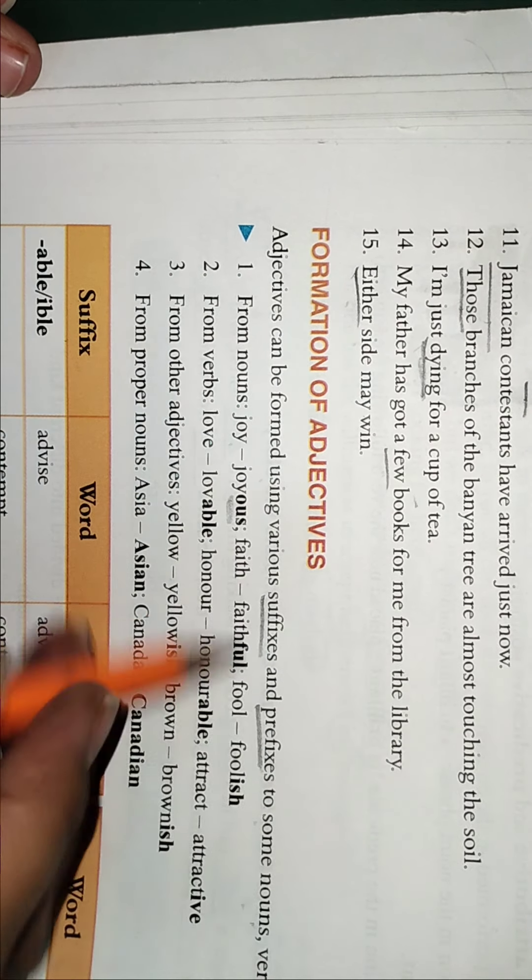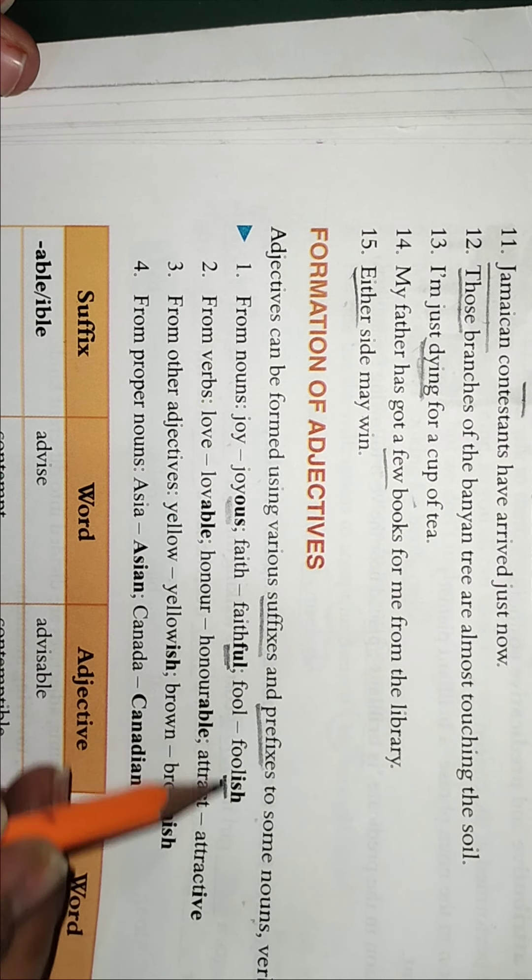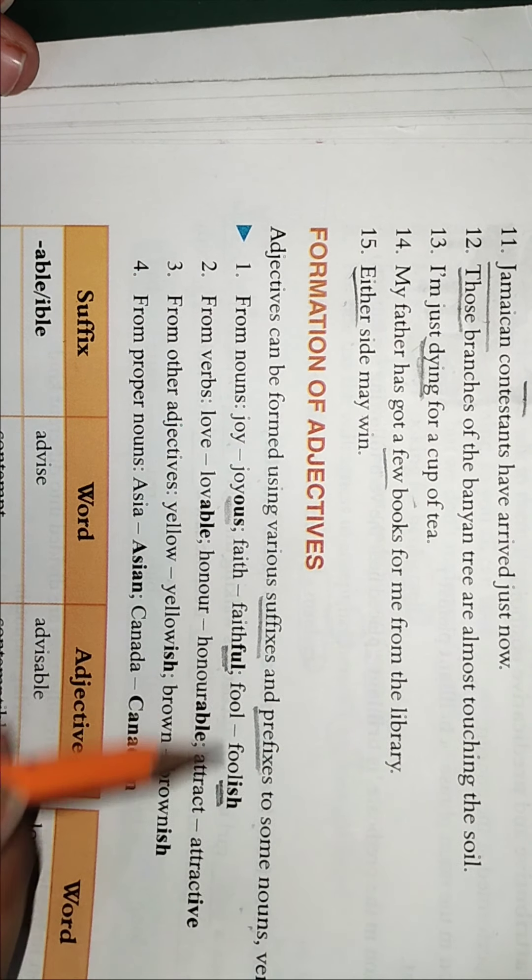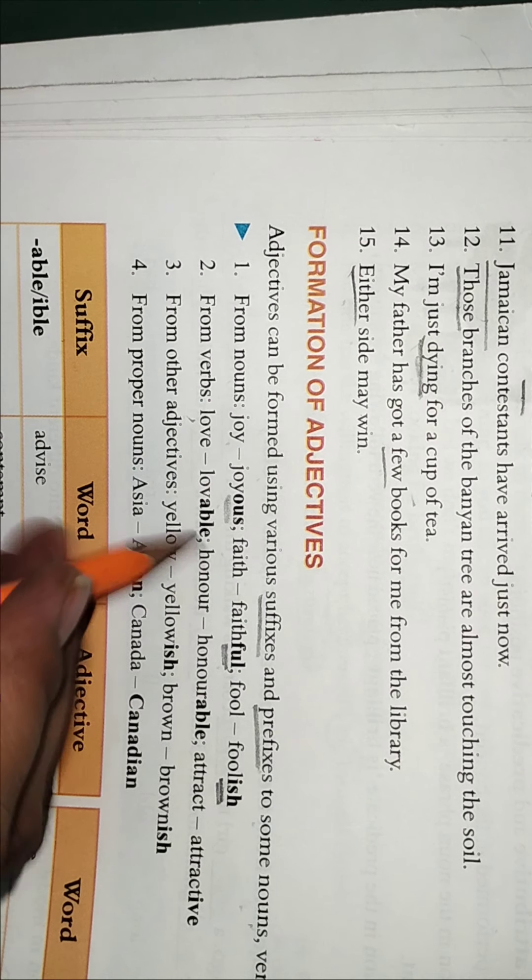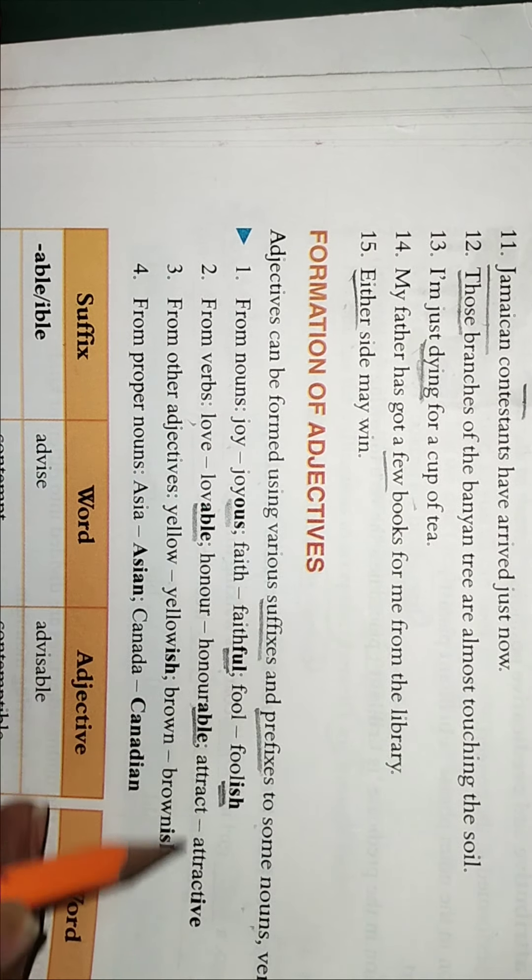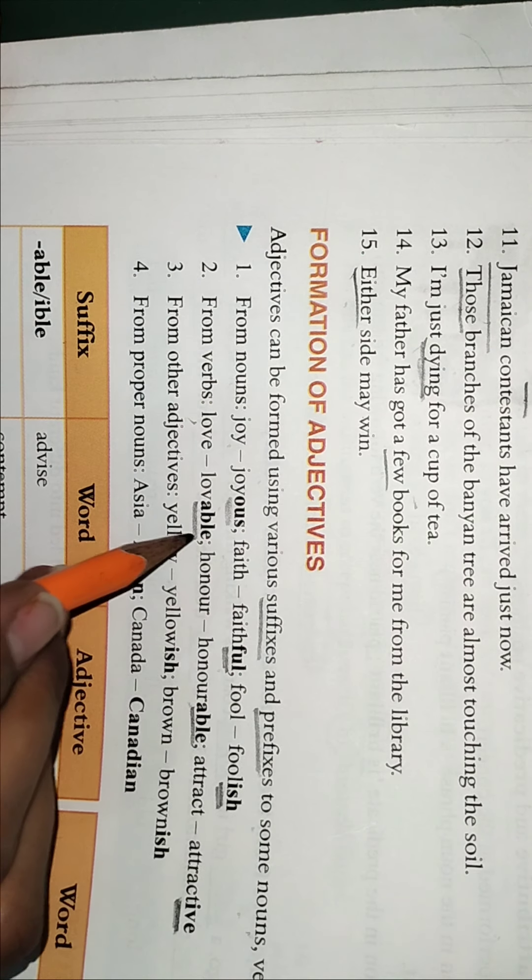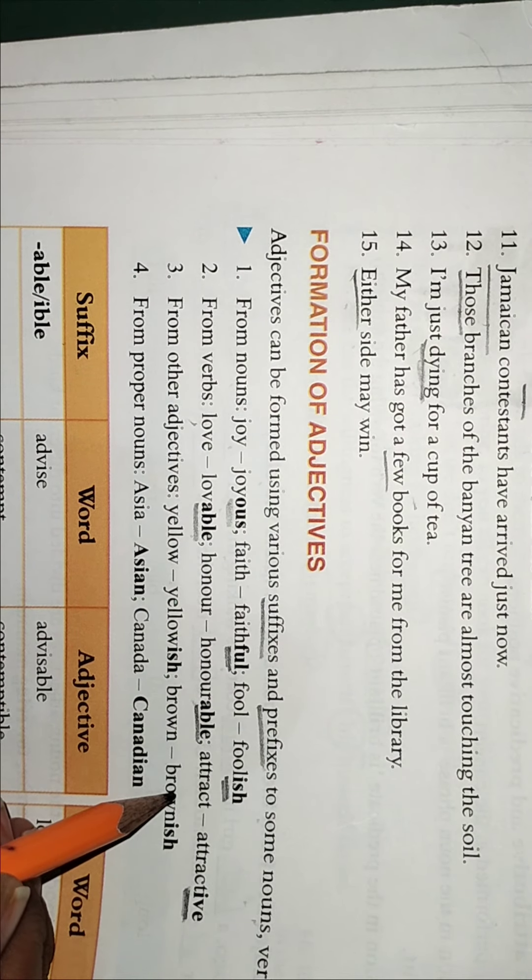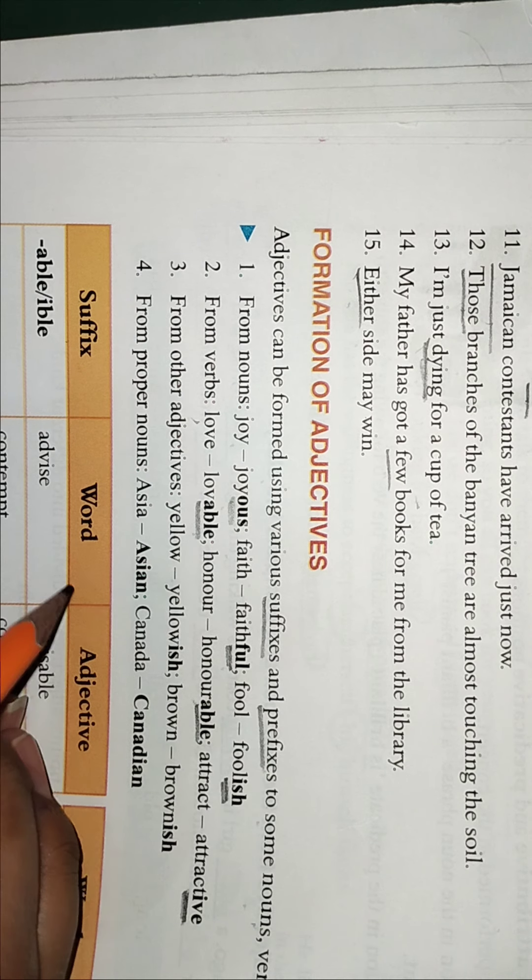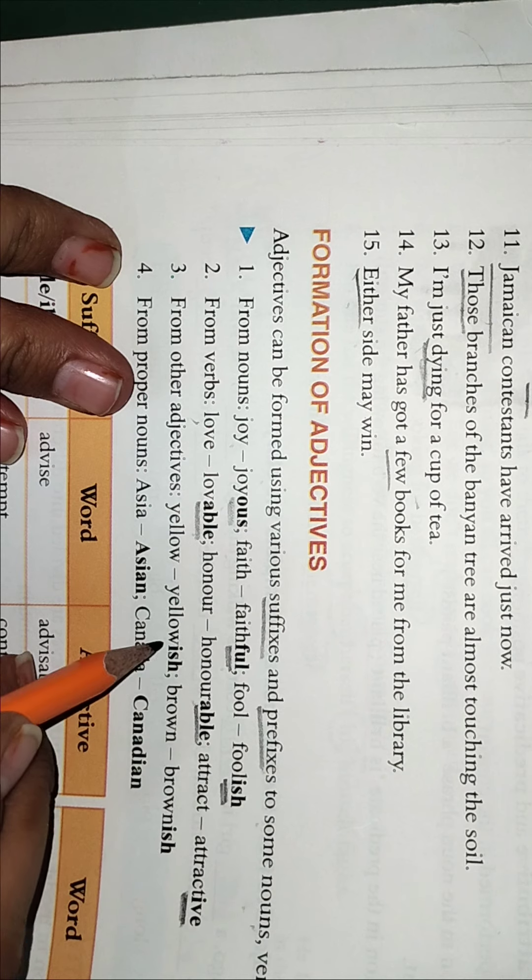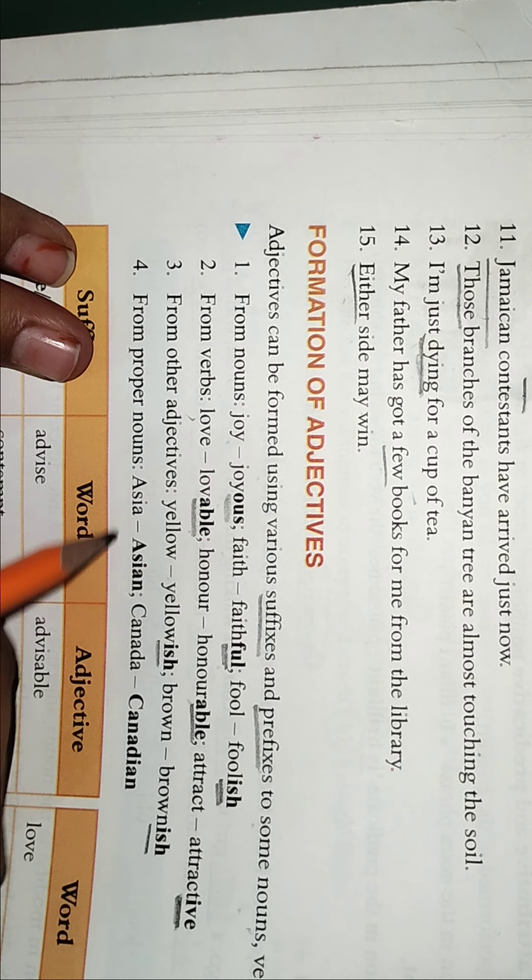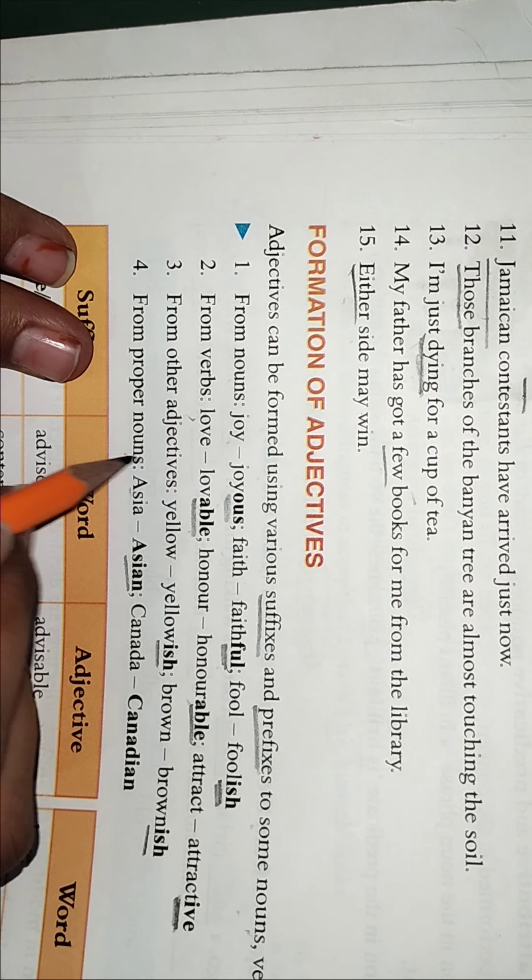From nouns - joy ka hum suffix laga diya, faith mein suffix laga diya to kya ban ge: joyous, faithful, foolish. Verbs pe able laga diya - lovable, honorable, attractive. Ye ho gaye suffixes which are added at the end. Prefixes are added in the beginning.